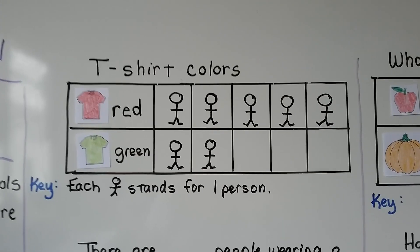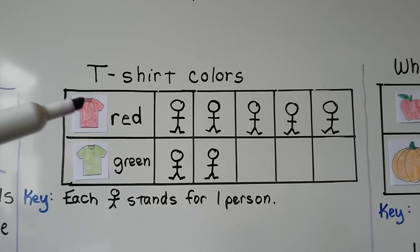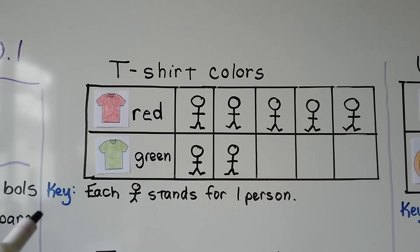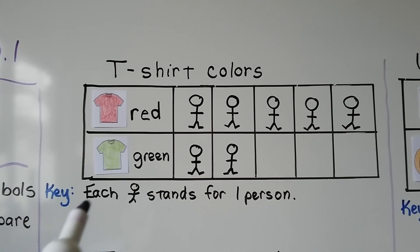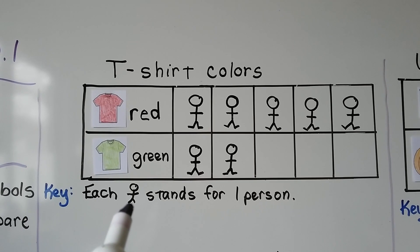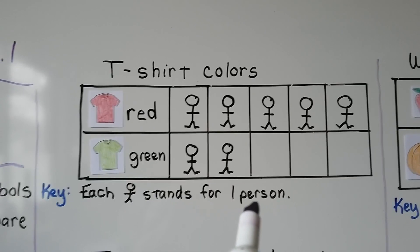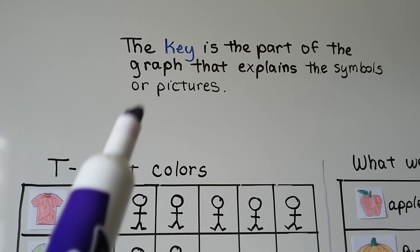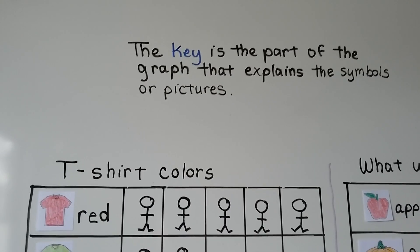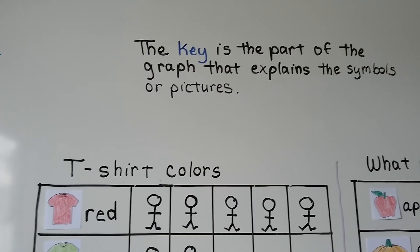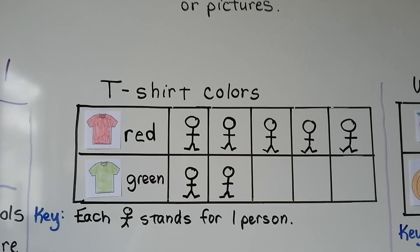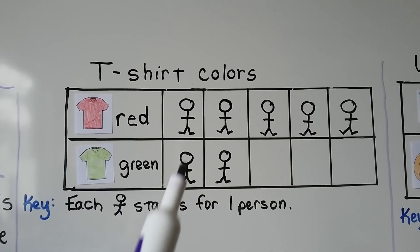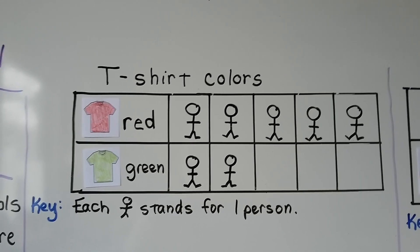Here's t-shirt colors. We have red t-shirts and green t-shirts. And down here, there's a little key. It says each little stick man stands for one person. The key is the part of the graph that explains the symbols or pictures. It tells us what they mean. So this one says that each stick man stands for one person.